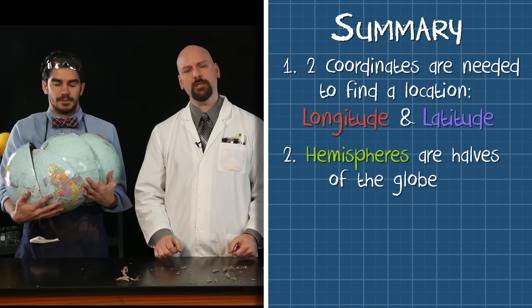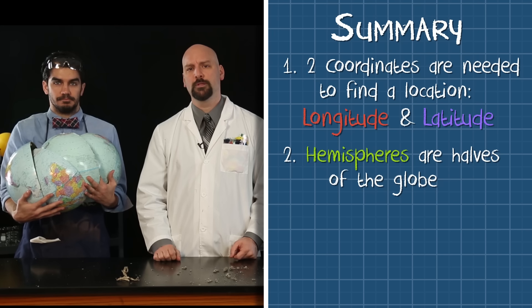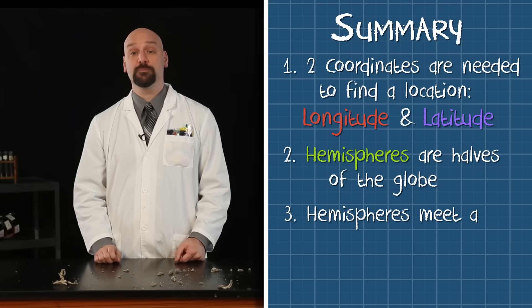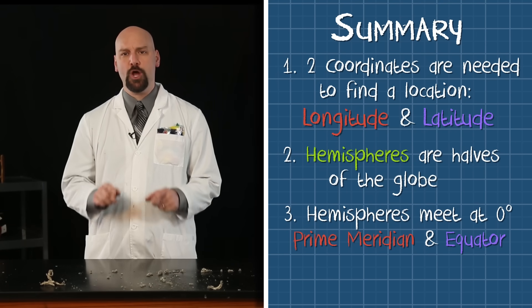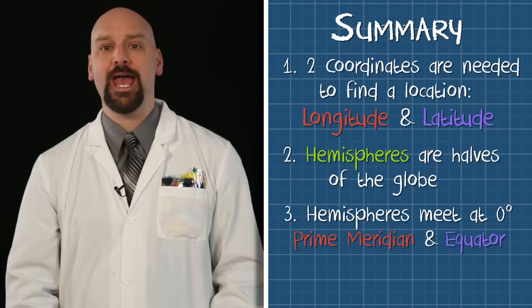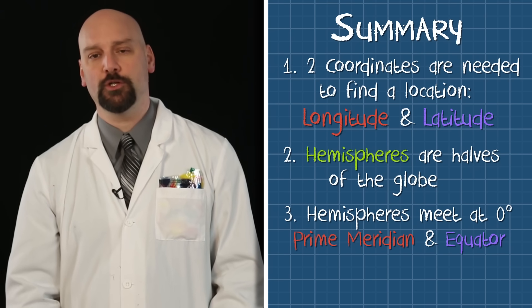And what does hemisphere mean? Half. Half of a globe. That's right. And remember, the point where the hemispheres meet is labeled zero degrees, and we start numbering there in both directions. Now that we've learned how longitude and latitude work, you're going to find some points on the globe yourself.